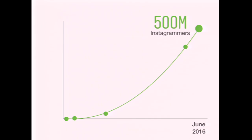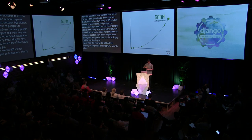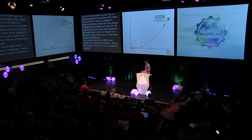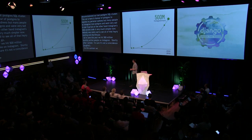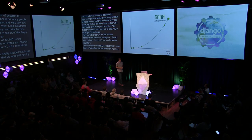In June of this year, we hit 500 million monthly active people on Instagram. Shortly after I joined — I'm sure it's not a coincidence. So this summer, we finally decided that it was time to fix the fact that we were still running on a heavily patched Django 1.3.